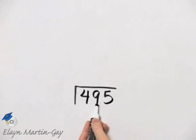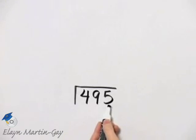Four plus nine is thirteen. Thirteen plus five is eighteen. Three divides into eighteen, so three should divide into this number.